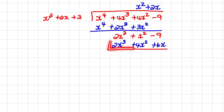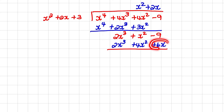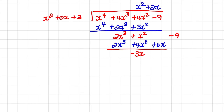So again we would subtract this result from the result which we had before. But we need to be careful because 9 is a constant value and it's standing over 6x, so it might be helpful to move the 9 a little bit towards the right. So if I subtract 2x cubed from 2x cubed I have 0. x squared minus 4x squared equals negative 3x squared. Then 0x minus 6x is minus 6x. And negative 9 minus 0 is simply negative 9.